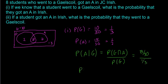And that means the probability they got an A, given they went to a Gaelscoil, is going to equal 0.8. And so we see that that's different than the probability of a normal student getting an A.